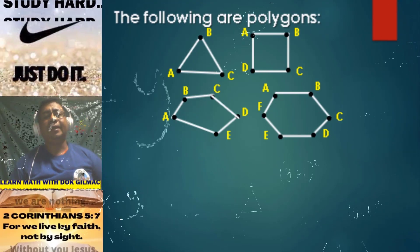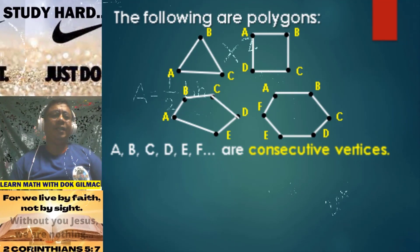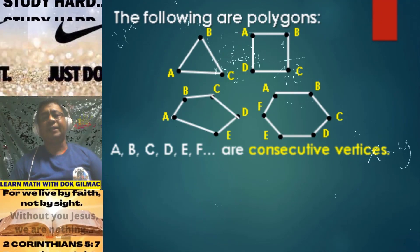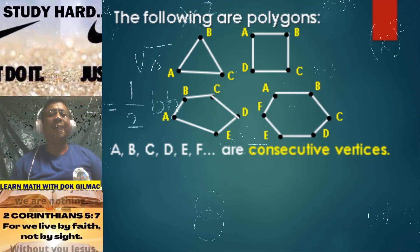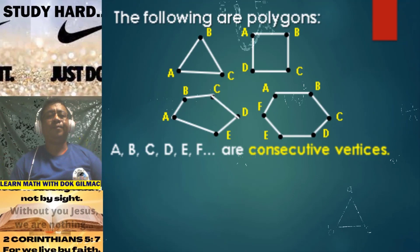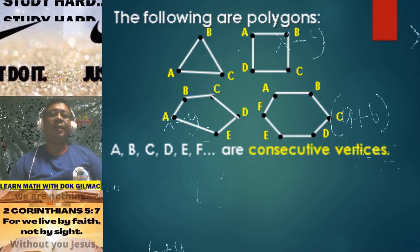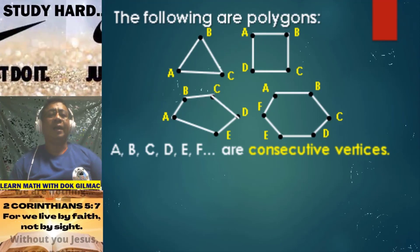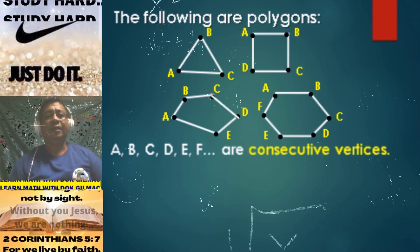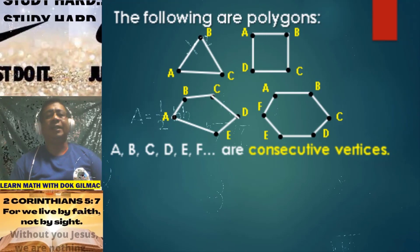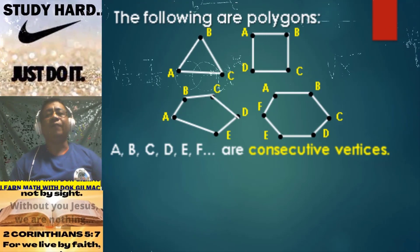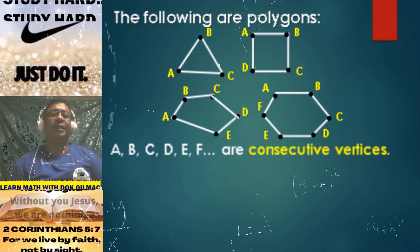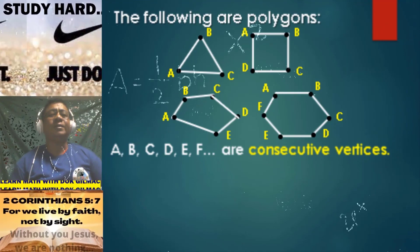Let's recall class. Depending on the number of sides of the given polygon, as you can see in the given triangle we have three vertices, so the consecutive vertices here are A, B, and C. For the quadrilateral we have A, B, C, and D. For the pentagon we have A, B, C, D, and E. For the hexagon we have A, B, C, D, E, and F. These are all consecutive vertices.